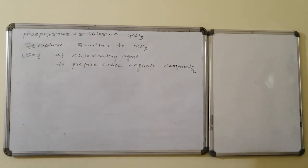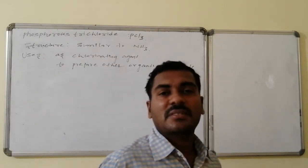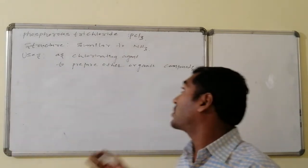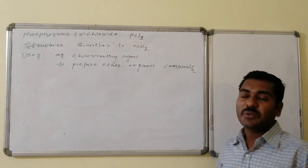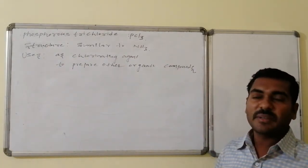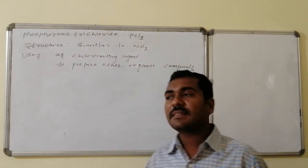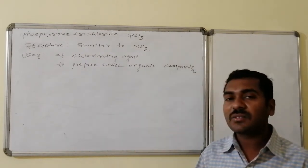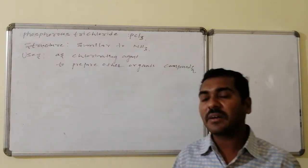The structure of PCl3 is similar to that of ammonia. It is basically used as a good chlorinating agent and is also used to prepare other organic compounds.